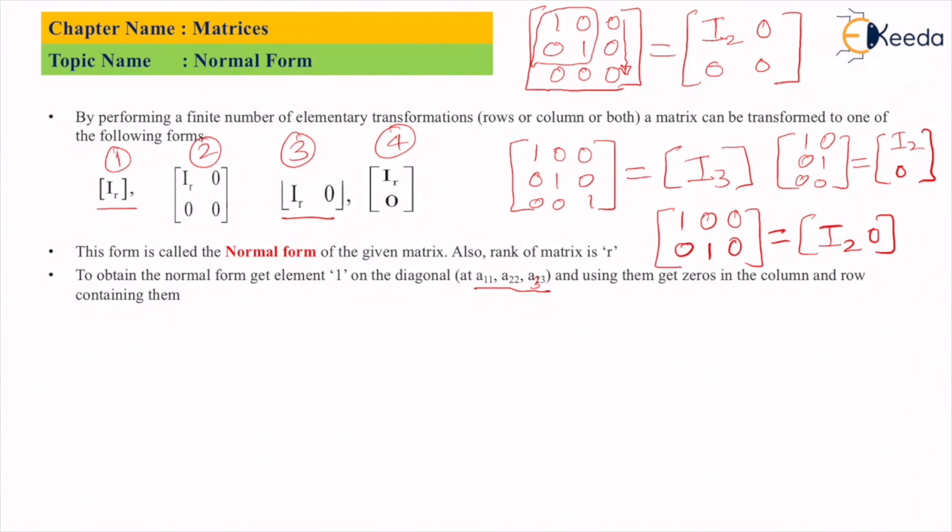We try to bring one at each position, and then using that one, we get zeros at the remaining positions in the matrix by using row and column transformations. This is how we convert any given matrix to normal form or canonical form.